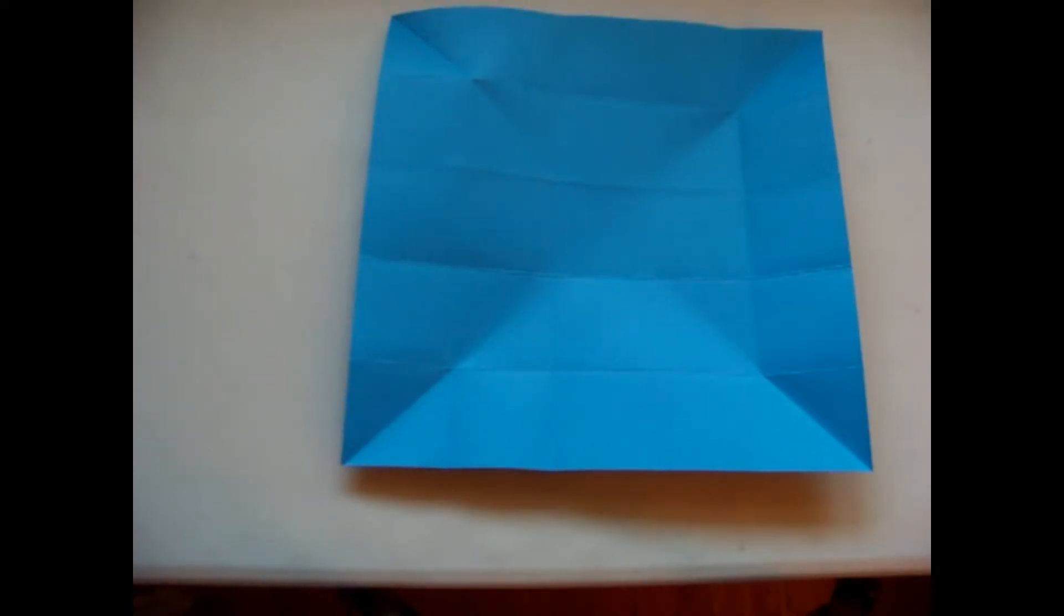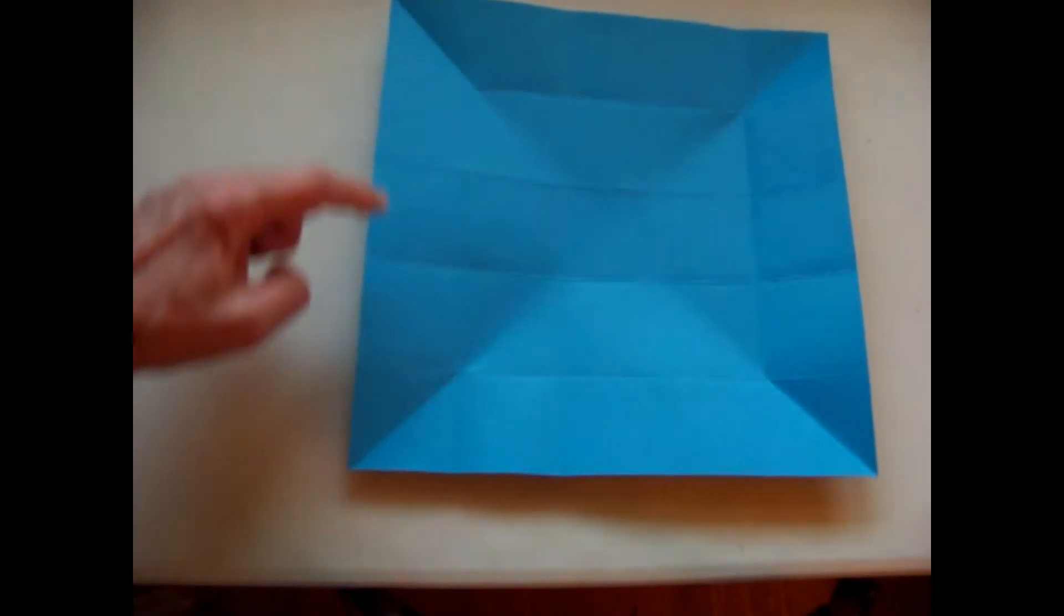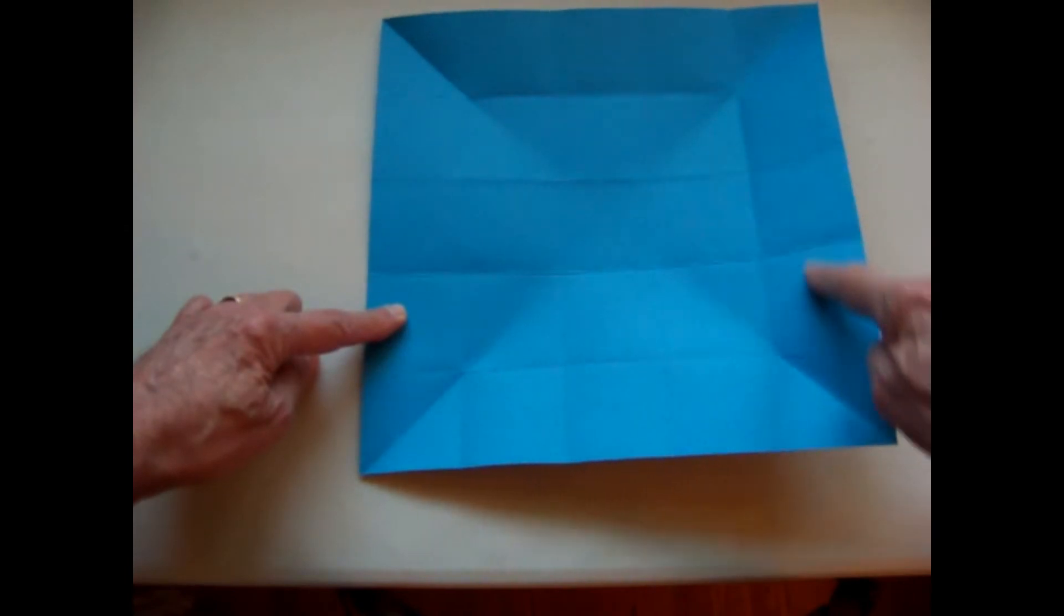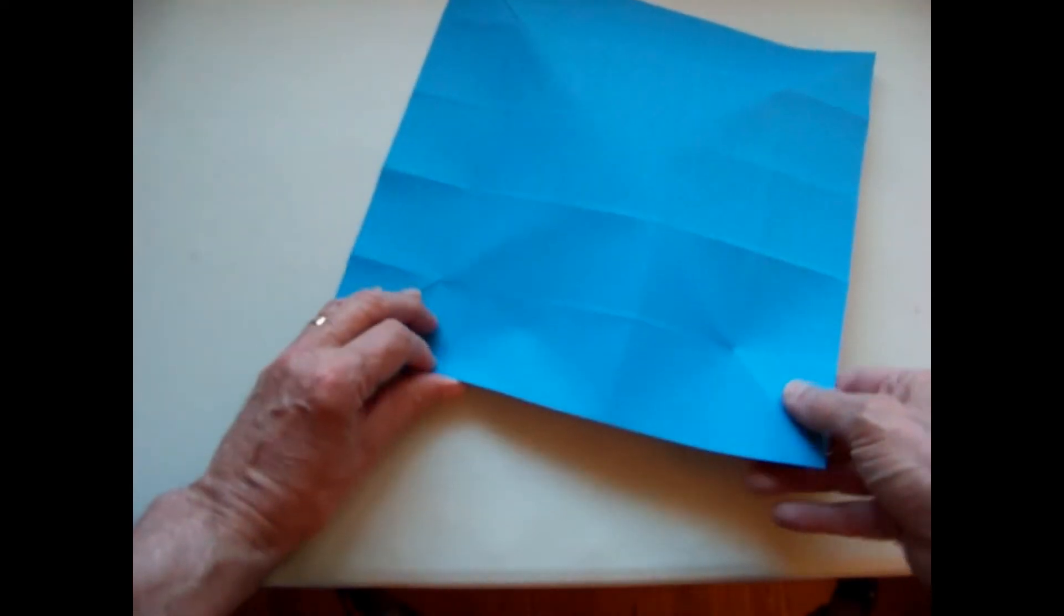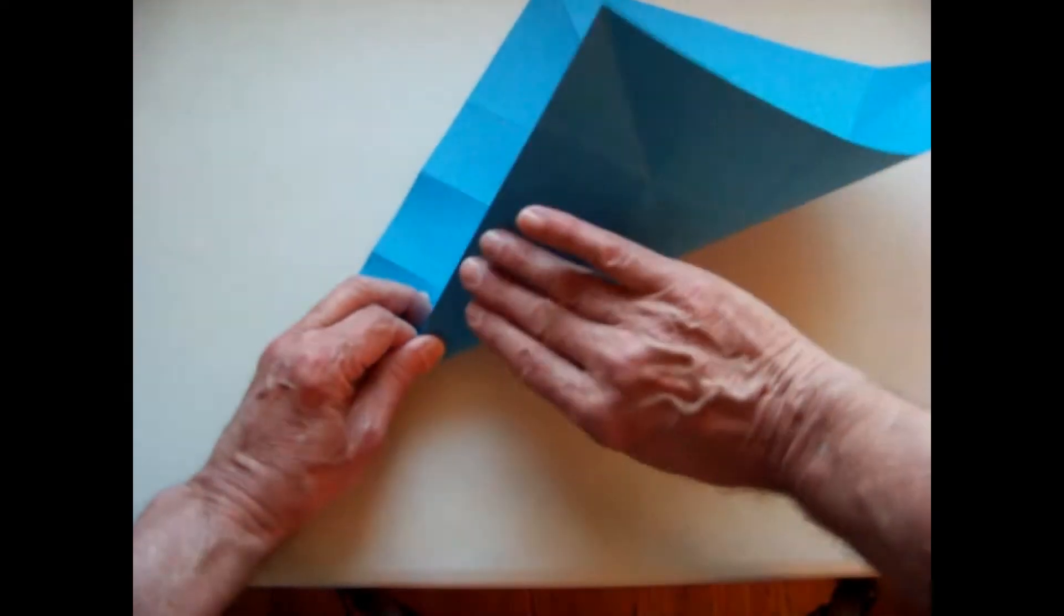The next step is to perform a mountain fold and unfold on the diagonals on the outside squares of the second and fourth rows, here, here, here, and here. This is a mountain fold. The best way to do that is to turn the paper over and do a valley fold on the other side.